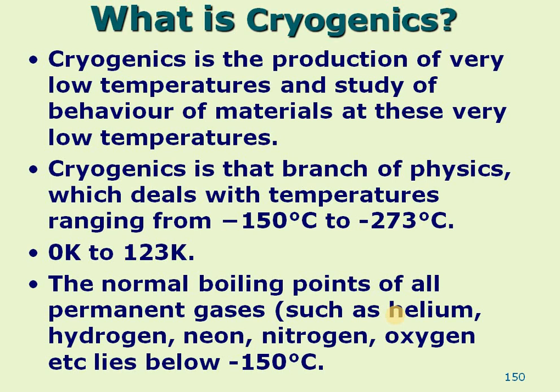It starts from oxygen, which has a boiling point of around minus 150 degrees Celsius. The reason minus 150 is taken as the cryogenic boundary temperature is that all permanent gases get liquefied below minus 150 degrees Celsius. That is the reason for taking minus 150 degrees Celsius as the boundary.